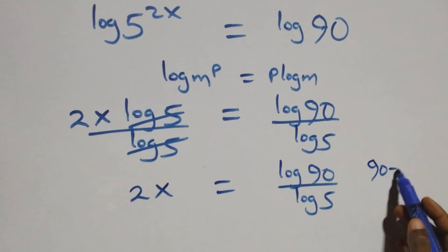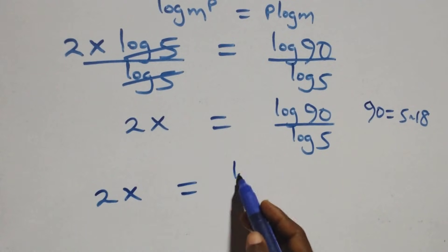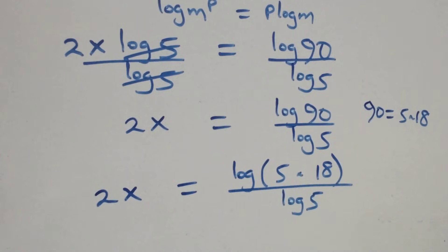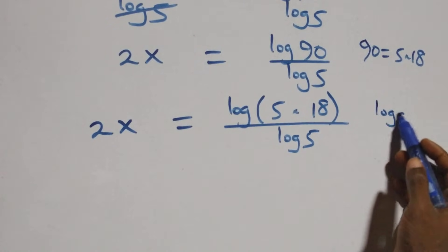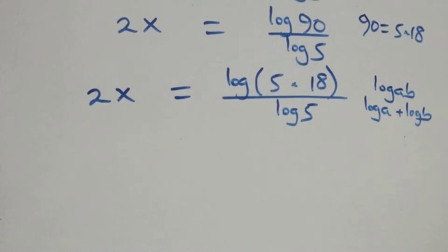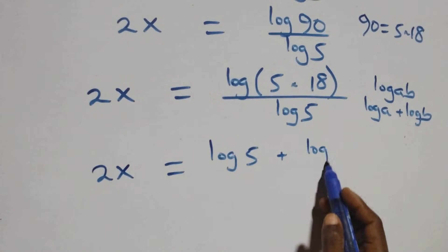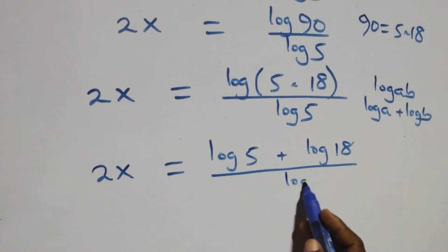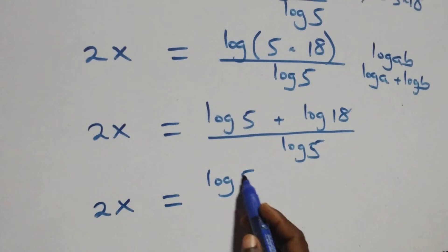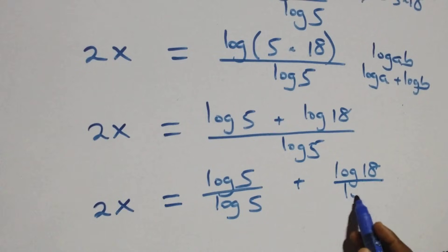At this next step we can write 90 as 5 times 18. So 2x equals log(5 times 18) over log 5. Then we apply the log product rule: log(a times b) is the same thing as log a plus log b. So here we have 2x equals log 5 plus log 18, all over log 5. Then we separate this into two fractions: 2x equals log 5 over log 5 plus log 18 over log 5.